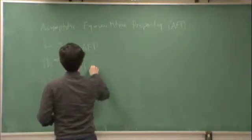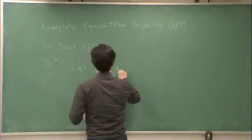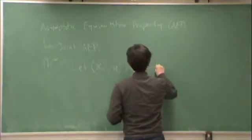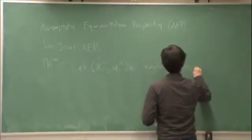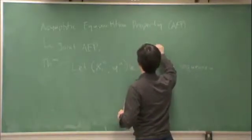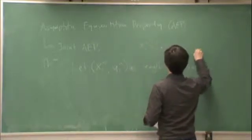Let's let x from 1 to n, y from 1 to n be length n sequences. Remember my notation here, x1 to n is equal to the vector x1, x2, and so on, xn.